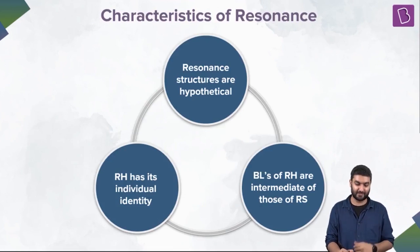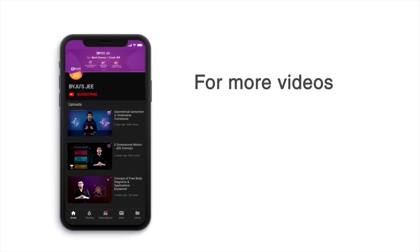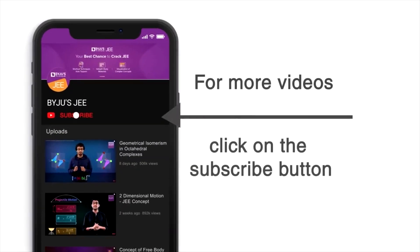Further, what do we have over here? Characteristics. So resonance structures are hypothetical. Resonant hybrid has its own individual identity. It actually exists where resonance structures are hypothetical. Bond lengths of resonance hybrid are intermediate to those of resonance structures. For more videos and live lectures on the JEE, click on the subscribe button now.